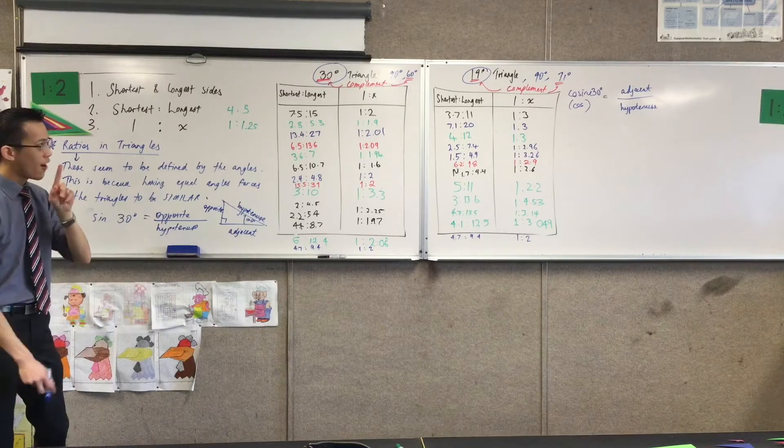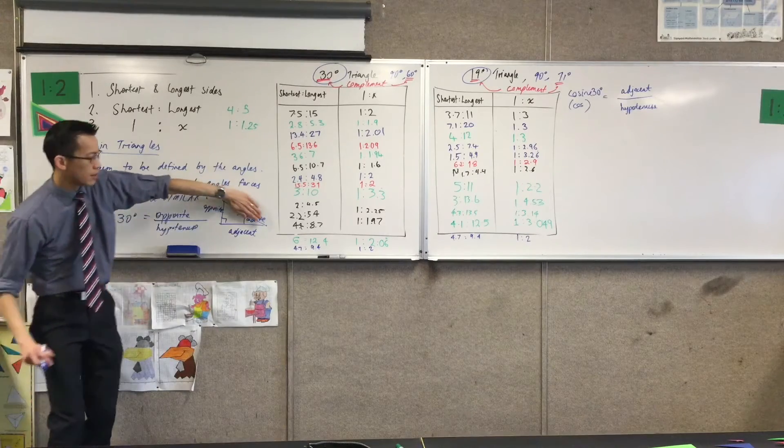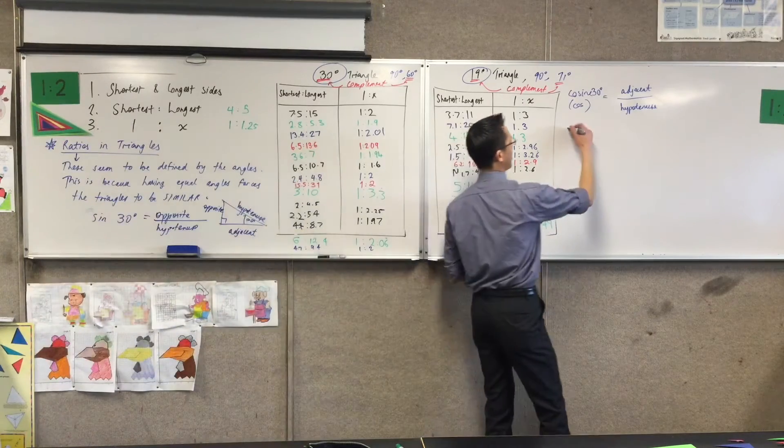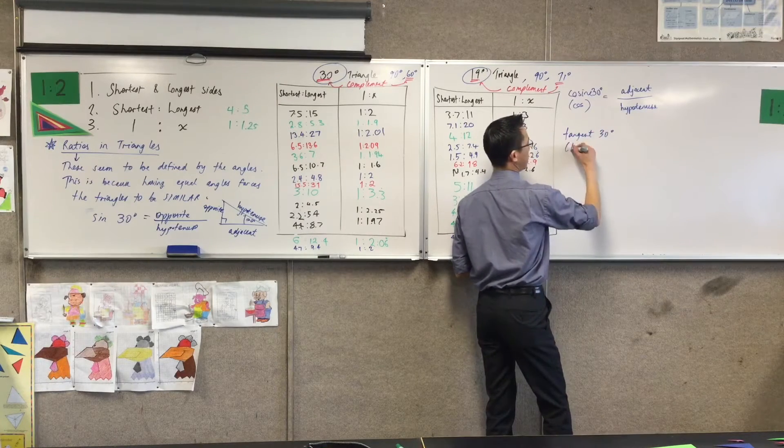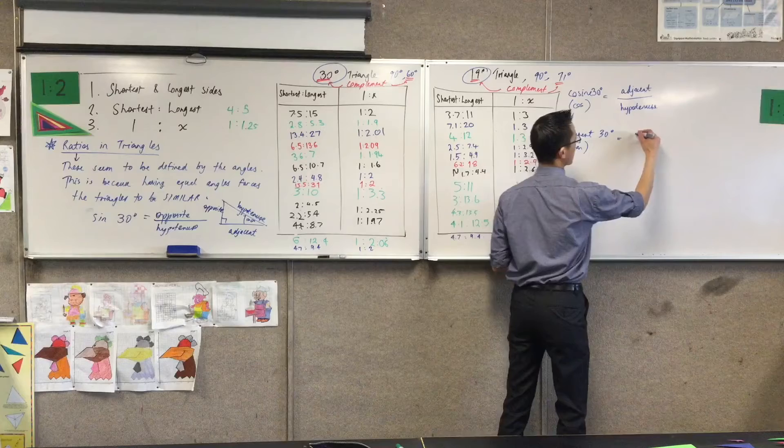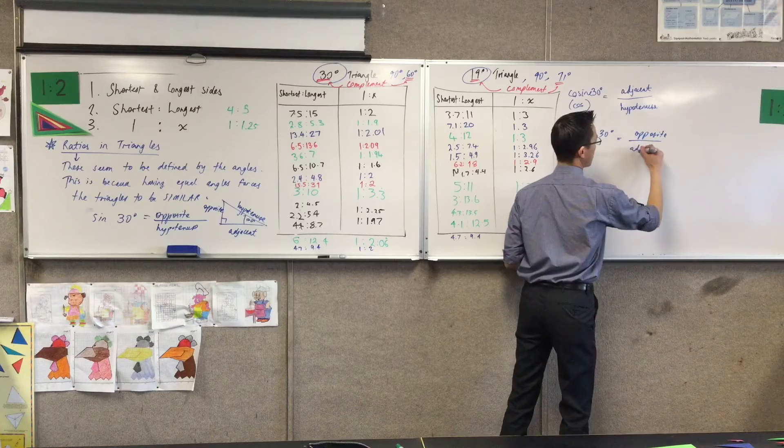So there's the opposite side and the adjacent side. If you leave out the longest one, the hypotenuse, we call this guy tangent, which we abbreviate to tan.